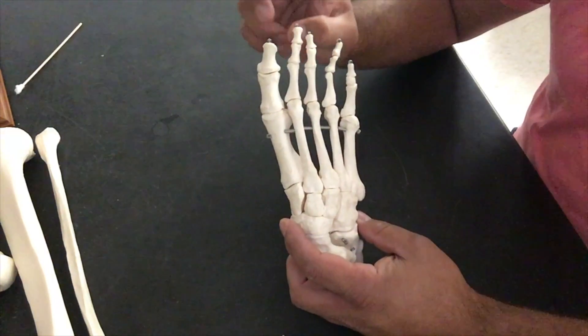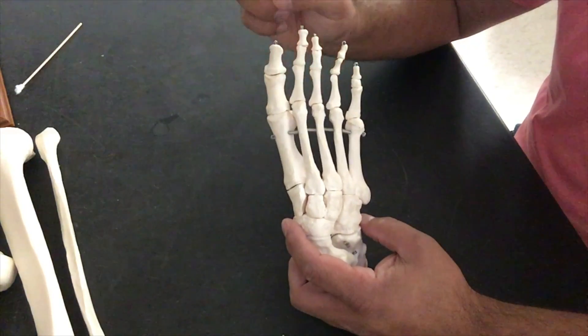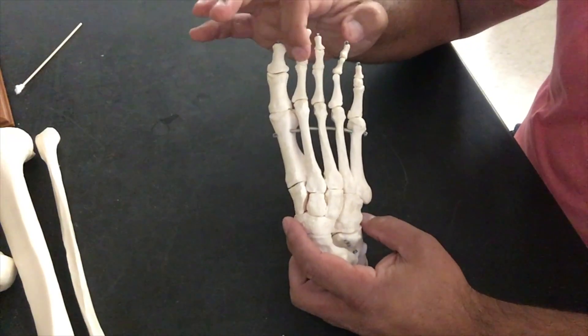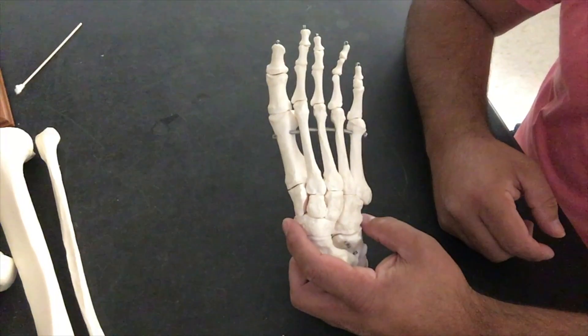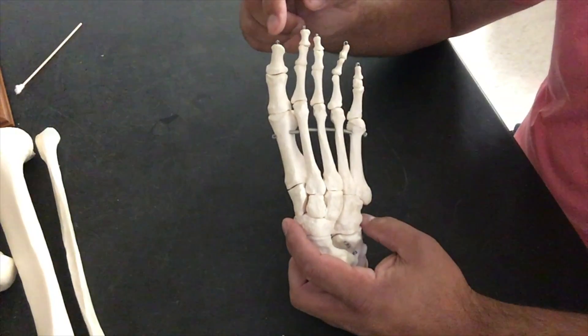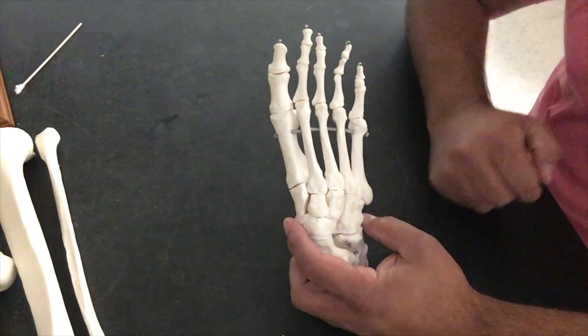And we have our phalanges. Notice, if you go back to our tutorial on our hand, we typically have one, two, three phalanges. In our big toe, however, we only have one, two. Every other toe will have three.